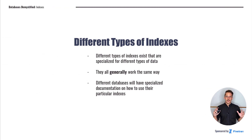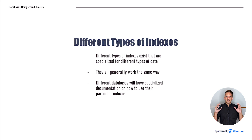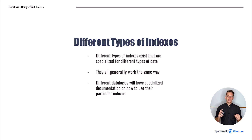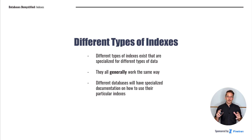An important thing to know is that there are lots of different types of indexes, and these indexes can be specialized for different types of data. All of these indexes generally work the same way, but they might be slightly more efficient for certain types of columns or for columns with more or fewer unique values. Unless you're really fine-tuning a database, it's not critically important to know the details of all these differences. Different databases have different documentation on how to use different indexes, and you can look up that specialty documentation for the database you're working with.